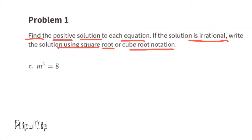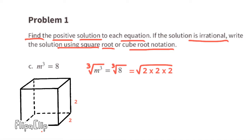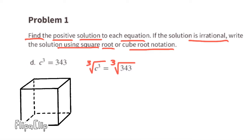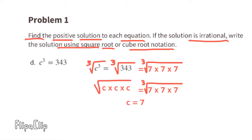Part c: m cubed equals 8. 2 cubed is 8 — 2 times 2 times 2 is 8 — so m equals 2. Part d: c cubed equals 343. 7 cubed equals 343 — 7 times 7 times 7 equals 343 — so c equals 7.